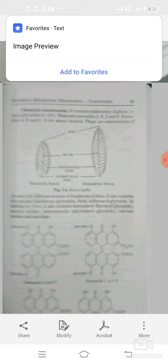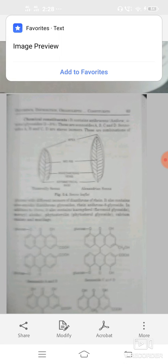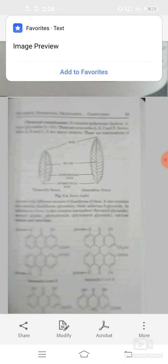Chemical constituents: it contains anthraquinone glycosides like sennoside A, B, C, D. Combination of glycosides with different isomers of dianthrone of rhein. It also contains aloe emodins, dianthrone glycosides, rhein, anthrone, 8 glycosides, and other flavone glycosides like kaempferol, myricitol, phytosterol, calcium oxalate, mucilage.